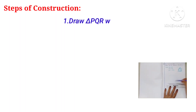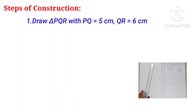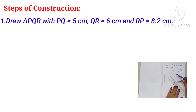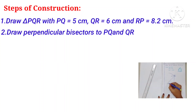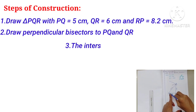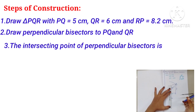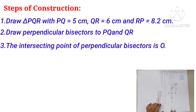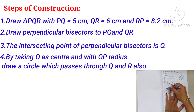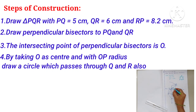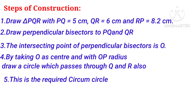Steps of construction: First, draw triangle PQR with PQ = 5 cm, QR = 6 cm, and RP = 8.2 cm. Second, draw perpendicular bisectors to the sides PQ and QR. Third, the intersecting point of the perpendicular bisectors is O. By taking O as center and OP as radius, draw a circle which passes through Q and R also. This is the required circumcircle.